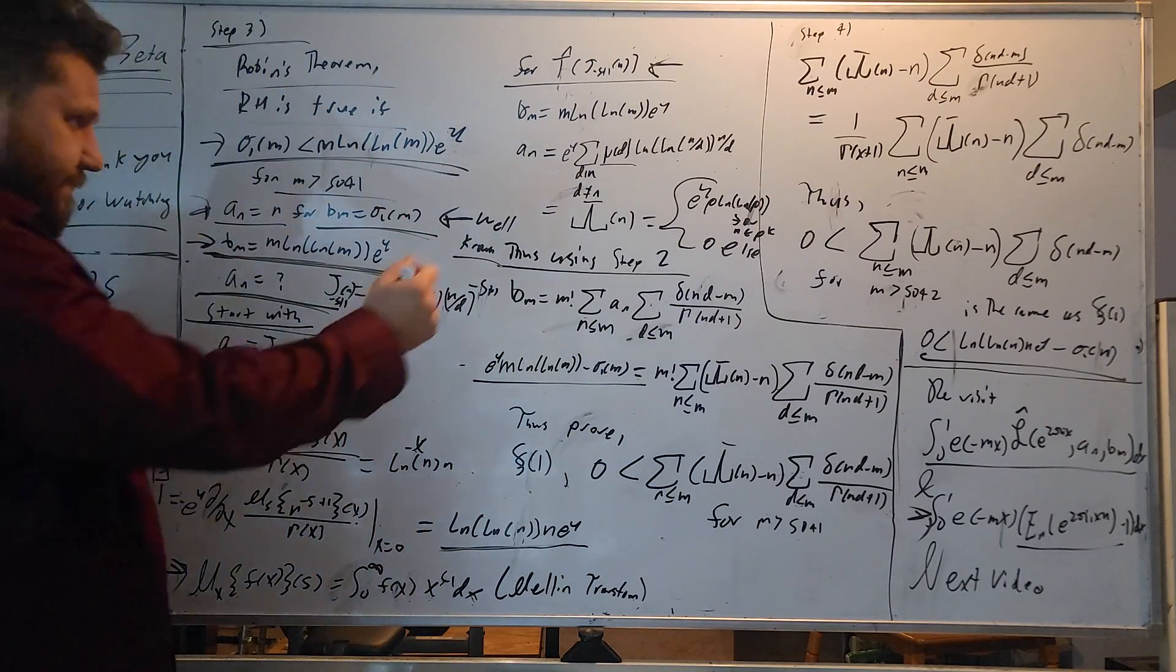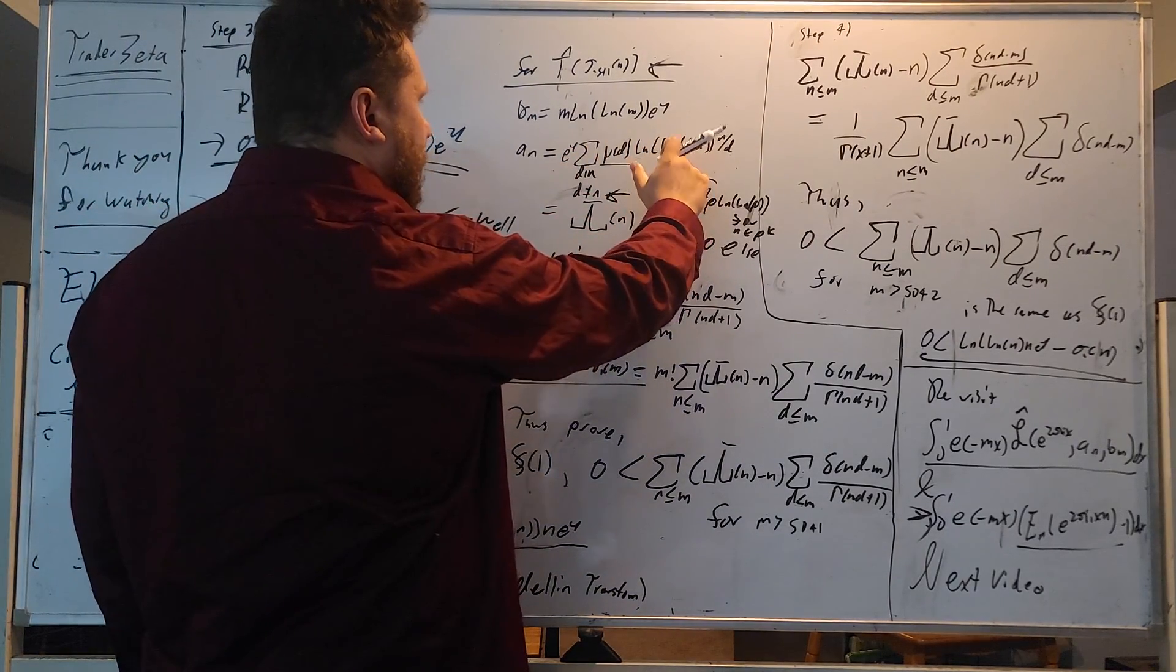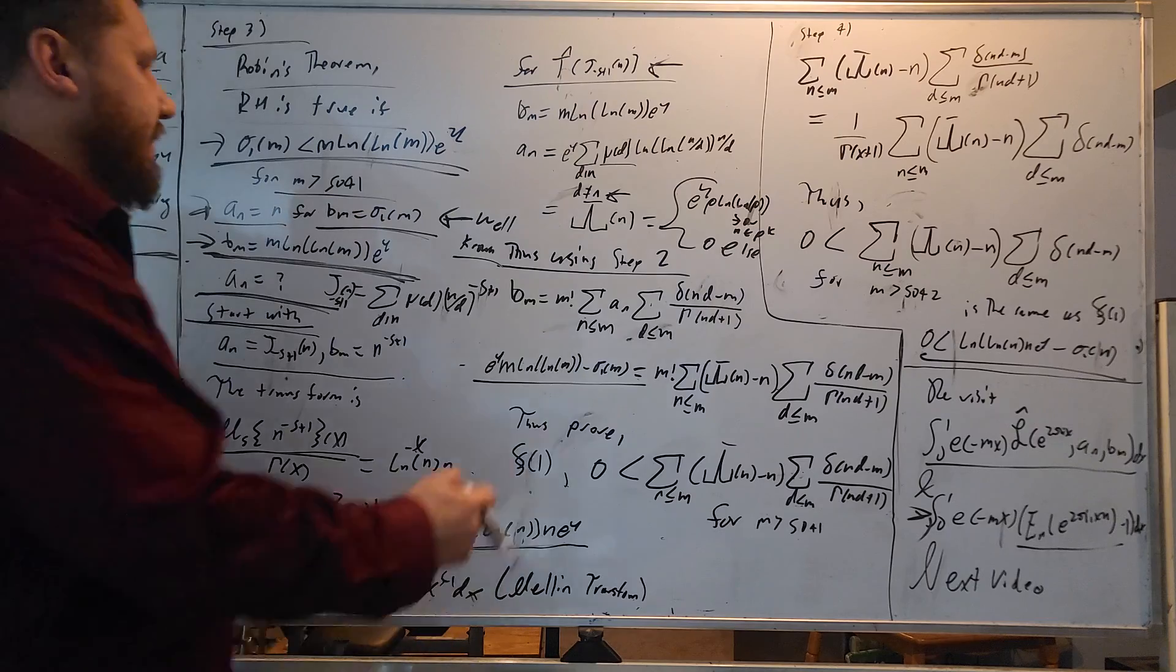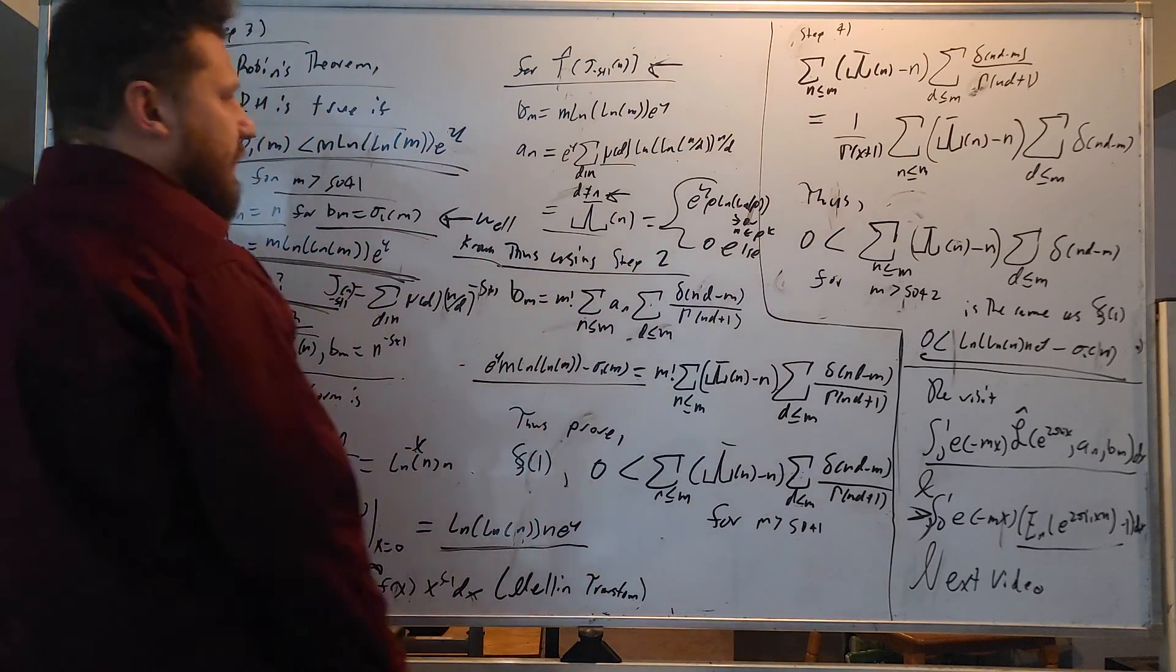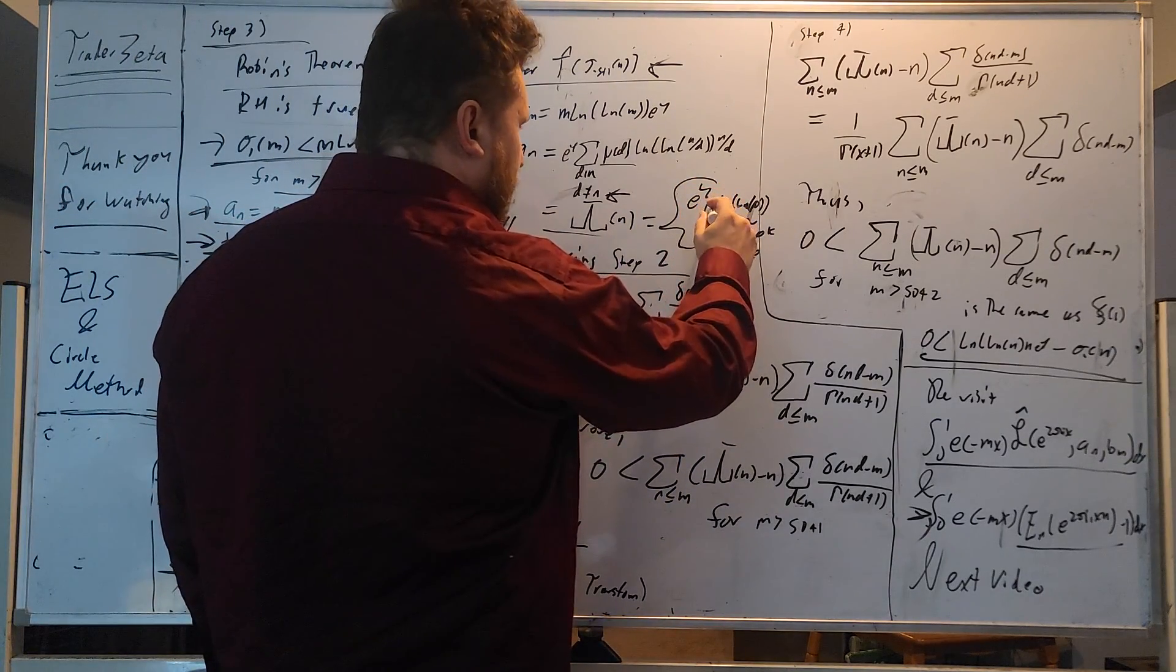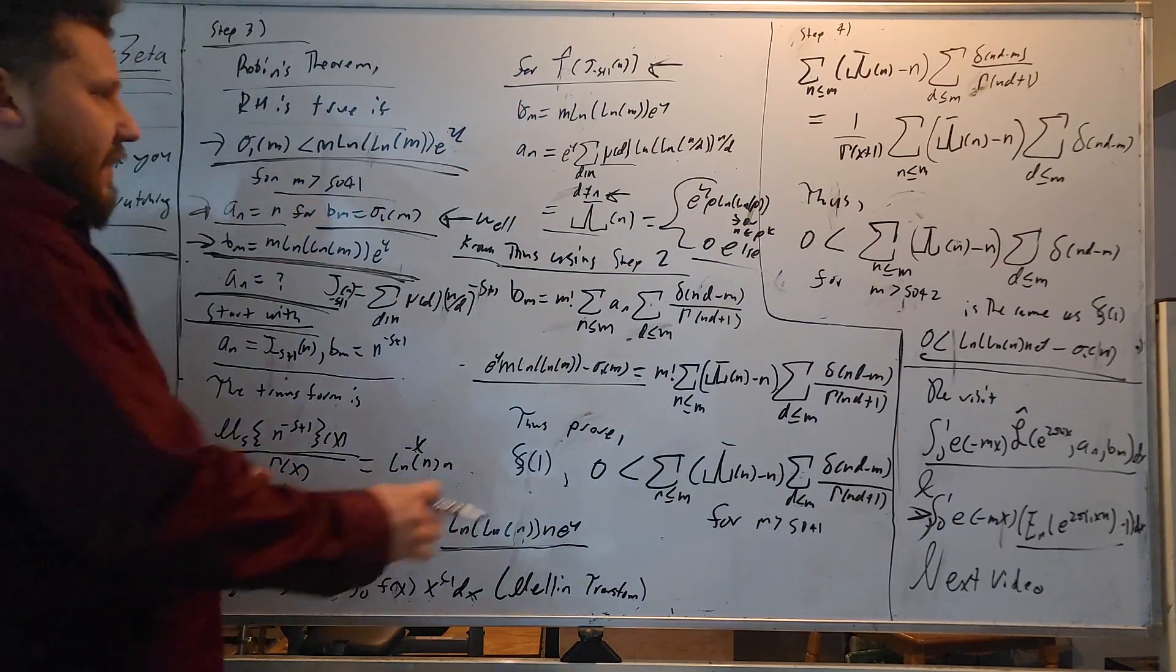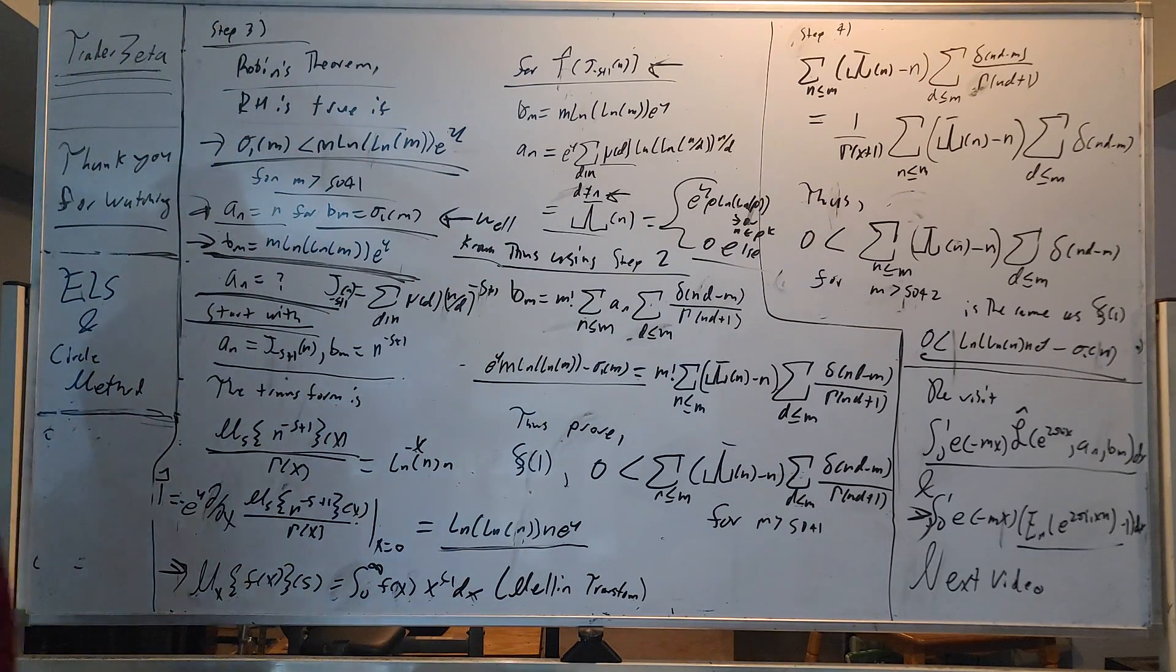So let me flip the board really quick. Awesome. So now we have step three. Here is Robin's theorem. Now, the Riemann hypothesis is true depending on the truth of this statement. What do I mean by that? If this statement is true, the Riemann hypothesis is true. If this statement is false, the Riemann hypothesis is false. So we have the first divisor function of m is less than m log m times e to the Euler-Gamma, or Euler-Mascheroni constant, for m greater than 5041.